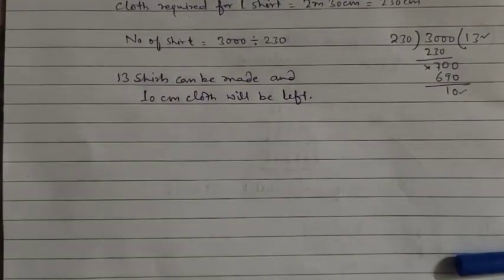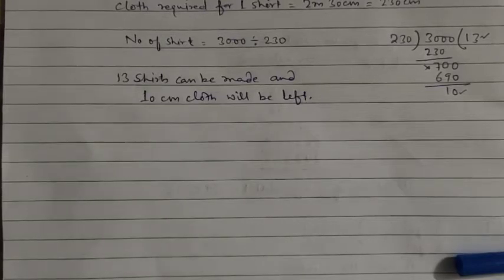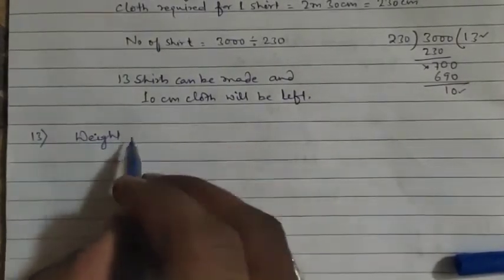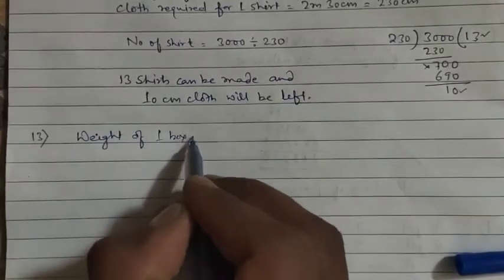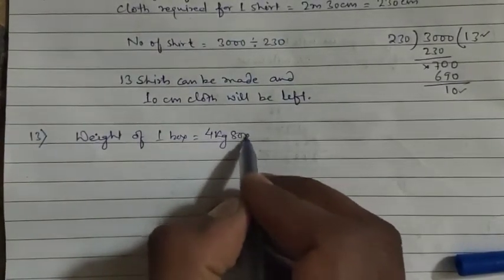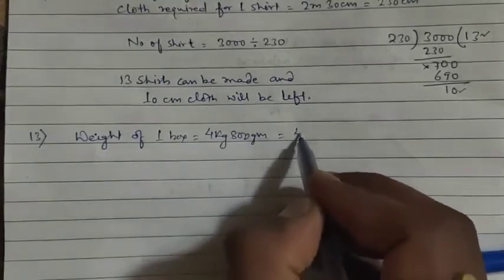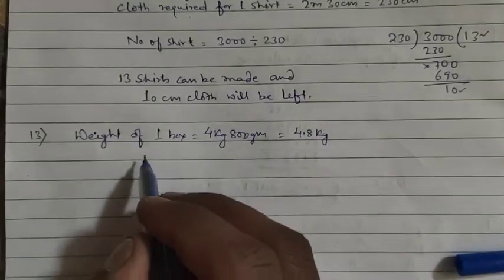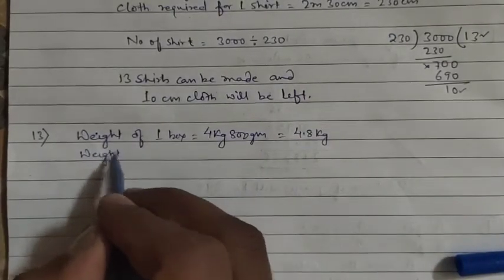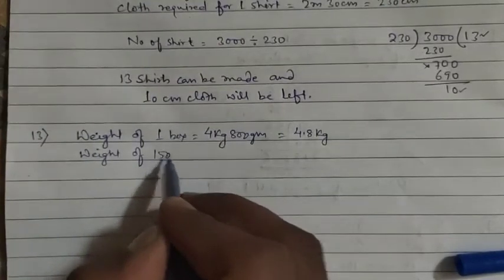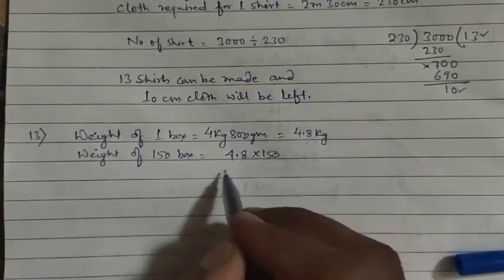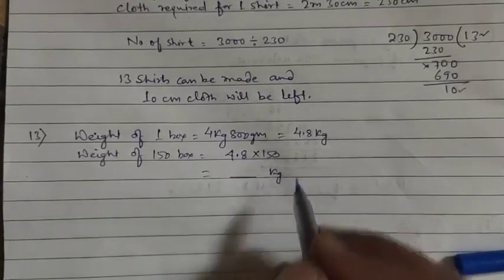Question 13: The weight of one box is 4 kg 800 grams, which equals 4.8 kg. The total weight of 150 boxes = 4.8 multiplied by 150. Calculate the result to get the answer in kg.